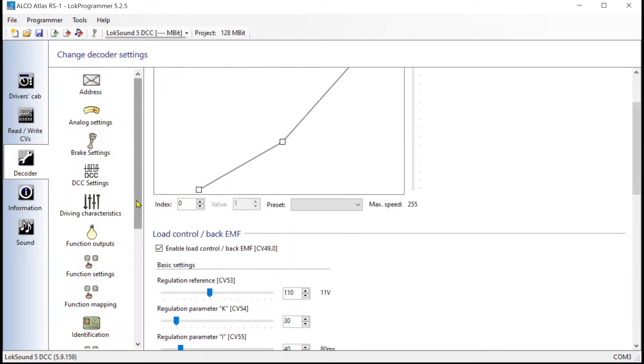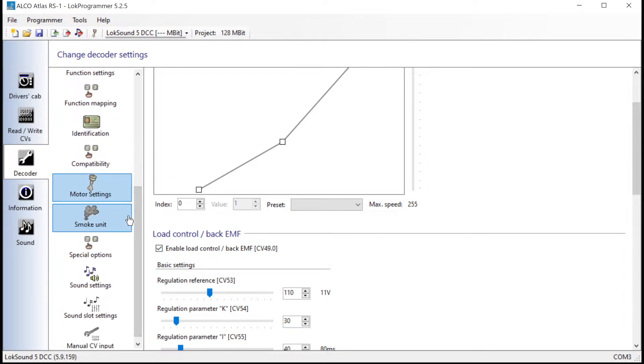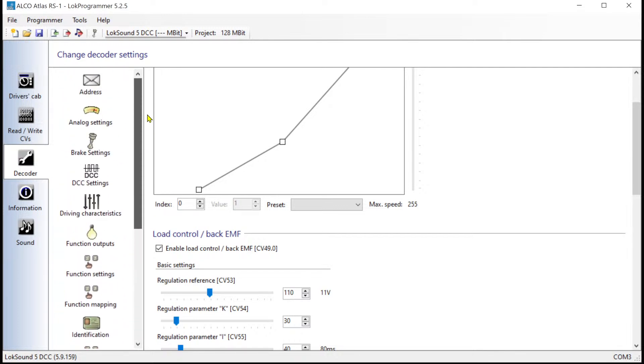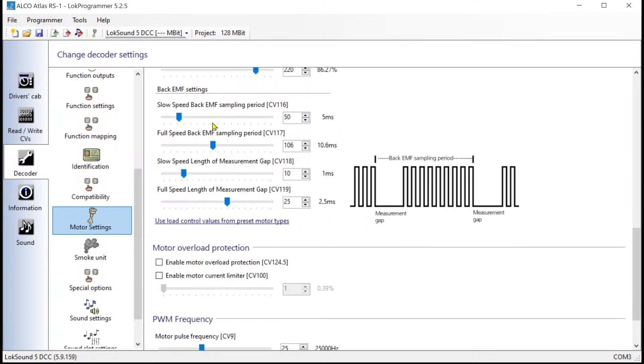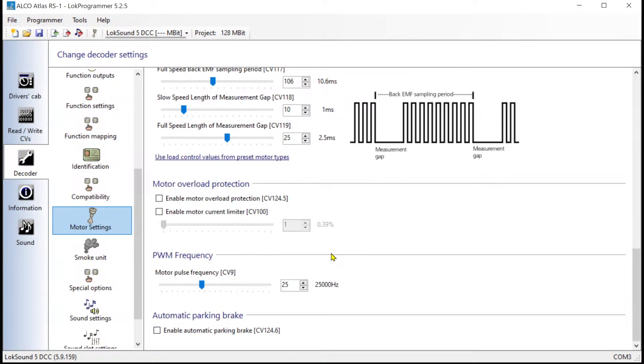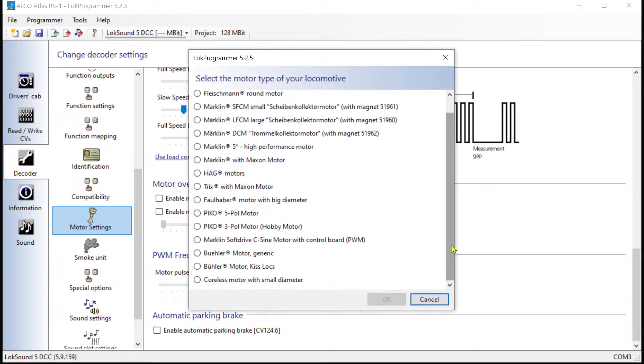That's the motor control where we have motor settings, driving characteristic. Now we need motor settings. Scrolling down, this is all about back EMF, that's a different story, huge subject. Use load control values from preset motor types. You can adjust every single CV, it's more than 300 CVs manually. Usually I'm using this Pico 5 pole motor or older if it's really open frame, they call it hobby motor, if model is like 20 plus years or even older.